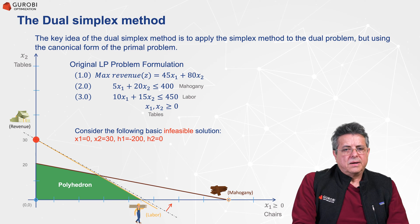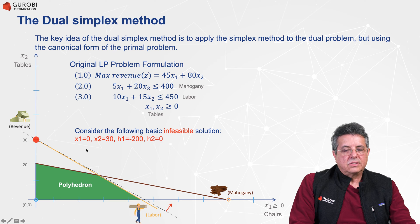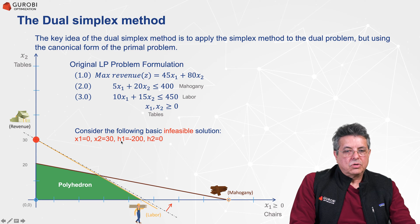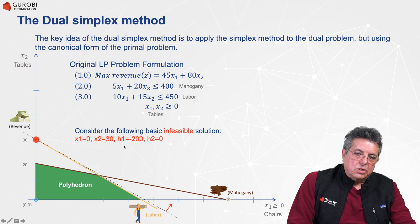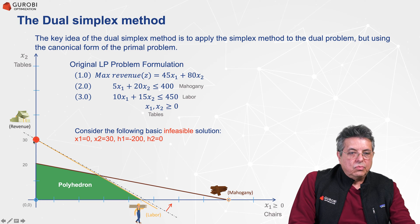Let's consider a basic infeasible solution. Essentially, what we are doing here is we don't build any chairs; we build 30 tables. In this particular case, when we build 30 tables, we are basically violating the mahogany constraint. So H1 is equal to minus 200, meaning that in order to build 30 tables, we will need an extra 200 units of mahogany. Also, H2 is zero, meaning that we are consuming all the labor capacity available.